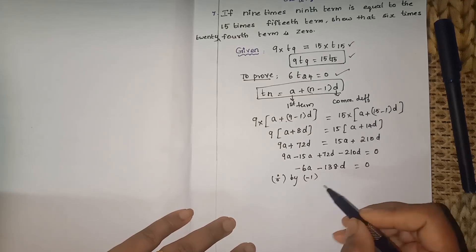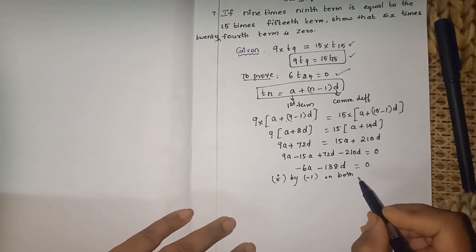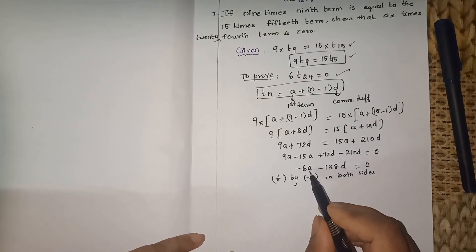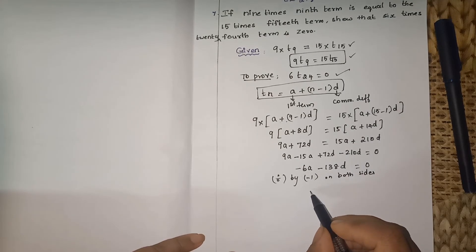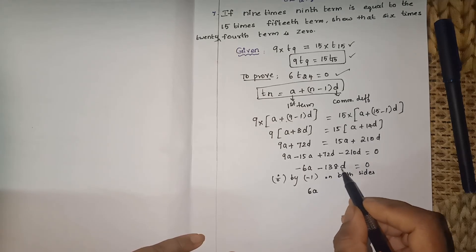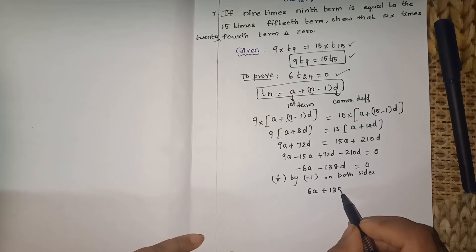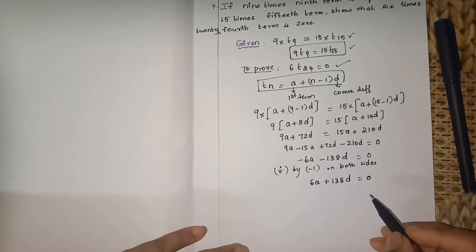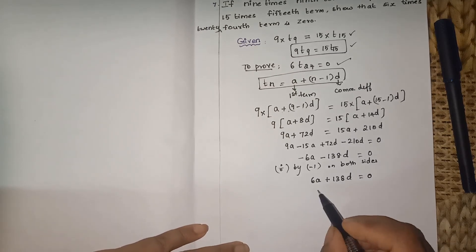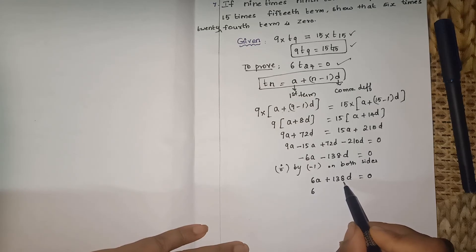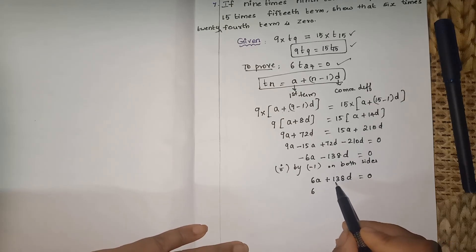Here minus is common, so divide both sides by minus 1. The right side remains 0. So minus 6a divided by minus 1 gives 6a, and minus 138d divided by minus 1 gives plus 138d. So we get 6a plus 138d equals 0. Now take 6 as common. Check: 138 ends in 8 so divisible by 2.